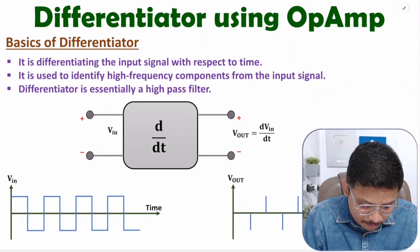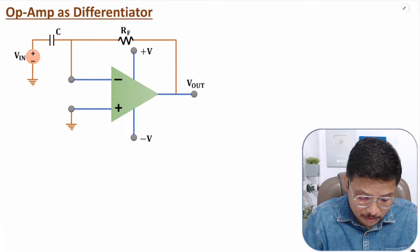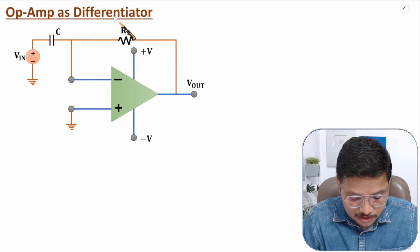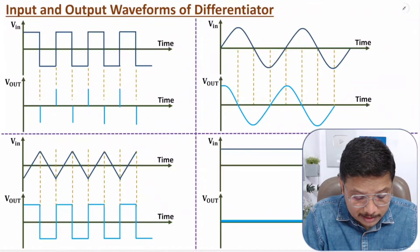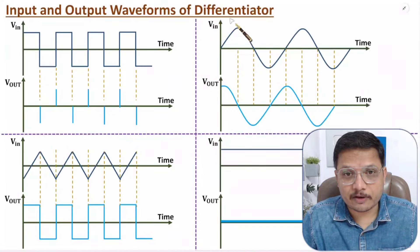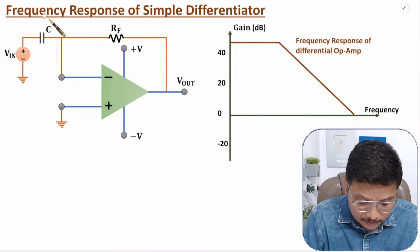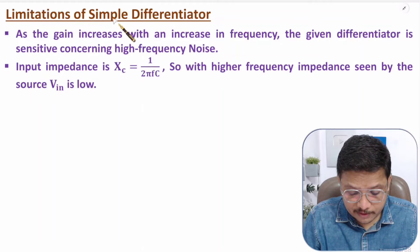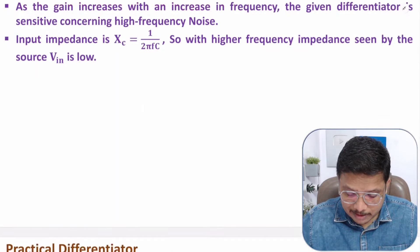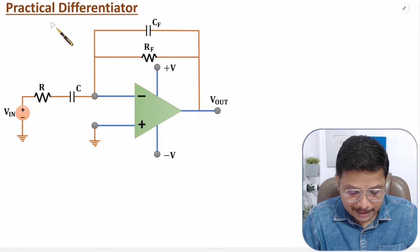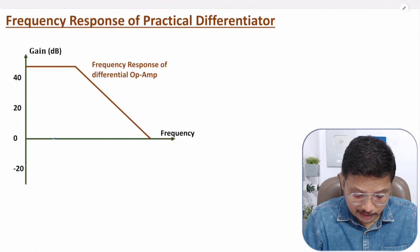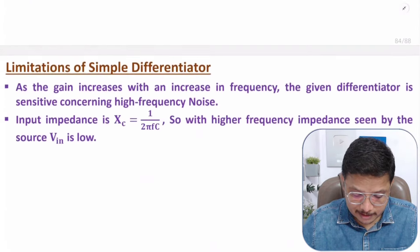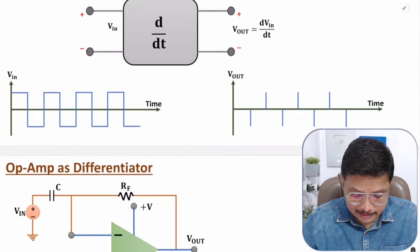First I will be discussing about basics of differentiator. After that, I will explain you operational amplifier as a differentiator. Here I will derive the output equation based on differentiation of input. After that, I will explain you interesting input-output waveforms of differentiator. After that, I will explain you frequency response of simple differentiator. After that, I will explain you limitations of this simple differentiation, and based on those limitations I will be designing practical differentiator. Based on practical differentiator, I will explain you its frequency response.